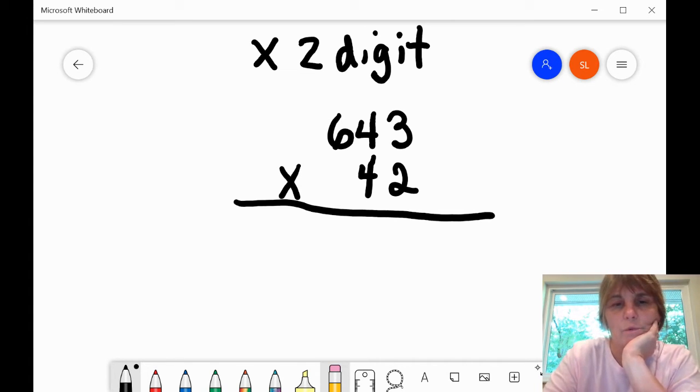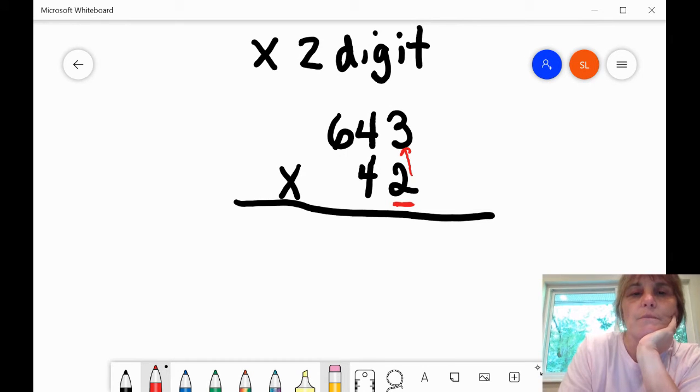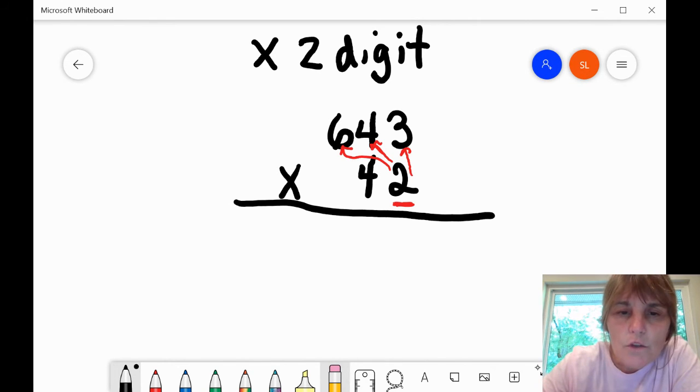And we're going to start here with the ones column right here, this two, and we're going to multiply times three, times four, and times six. So that's the first thing we will be doing. So we're going to say that two times three is six. Six is a single digit, so we don't need to carry anything.